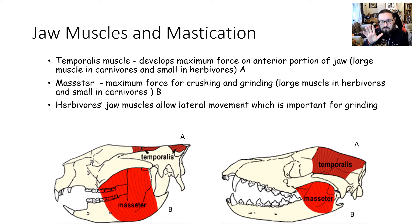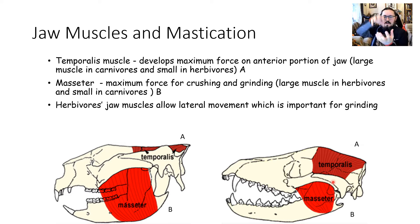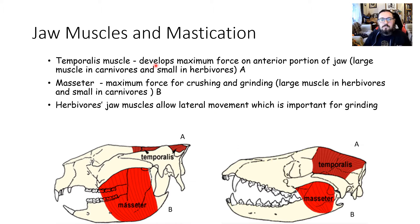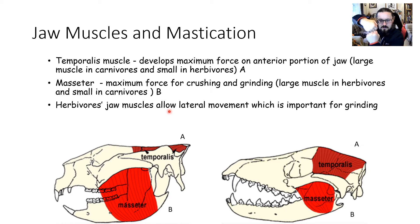The key muscles are the masseter and the temporalis. A large temporalis gives that snap-shut bite force in carnivores. The masseter provides maximum force for crushing and grinding and allows the sideways grinding movement found in herbivores. Herbivore molars have a large, flattened surface area, allowing them to grind cellulose-containing plant material effectively inside the skull.